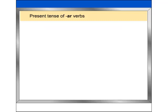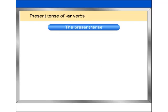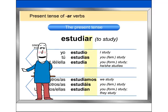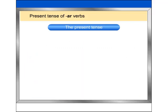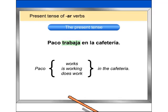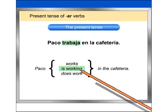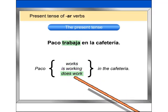Now let's talk about the present tense form. The Spanish present tense that you practiced when you conjugated the verb estudiar expresses, with just one word, the three different ways English has to express the present tense. For example: Paco trabaja en la cafetería. In English, this sentence can mean: Paco works in the cafeteria; Paco is working in the cafeteria; Paco does work in the cafeteria.